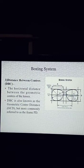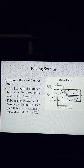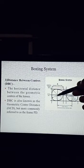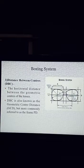Number 3: Distance Between Centers — DBC. DBC is the horizontal distance between the geometric centers of the lenses. DBC is also known as the Geometric Center Distance, GCD, but more commonly referred to as the frame PD. See the diagram. The horizontal line from one geometric center to the other is the DBC, also known as PD — pupillary distance.